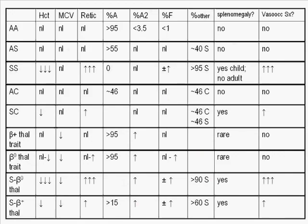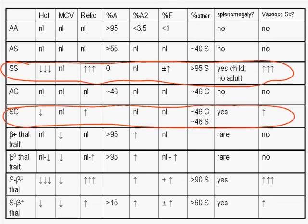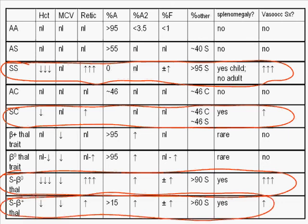When looking over all the data on the hemoglobinopathies reviewed, it is important to note that only four are associated with any degree of vaso-occlusive manifestations and are therefore referred to collectively as sickle cell disease. These include homozygous SS sickle cell anemia, hemoglobin SC disease, S beta zero thalassemia, and S beta plus thalassemia.